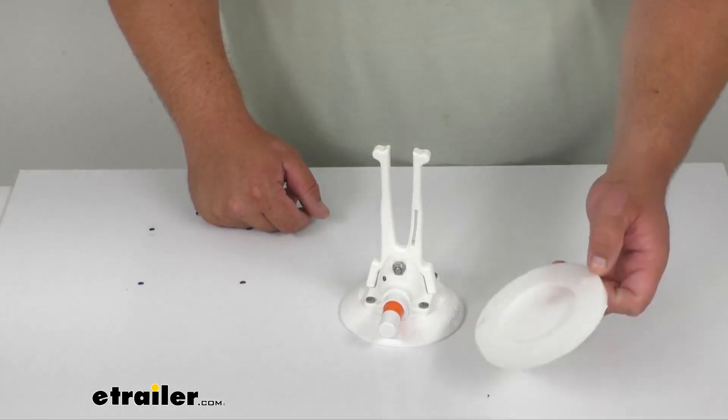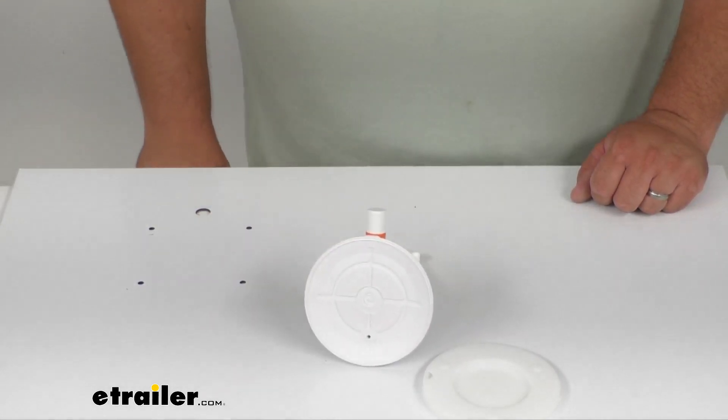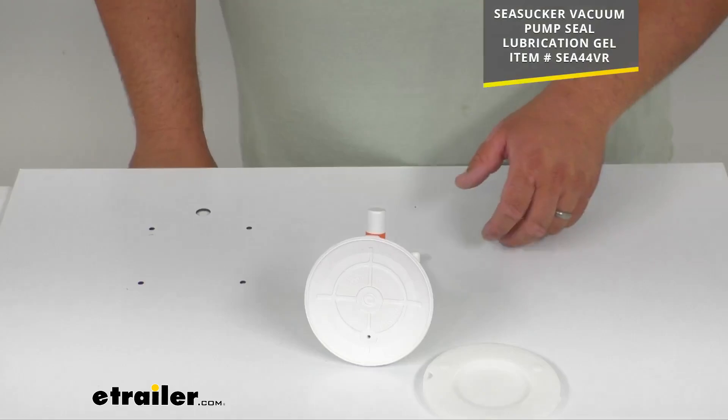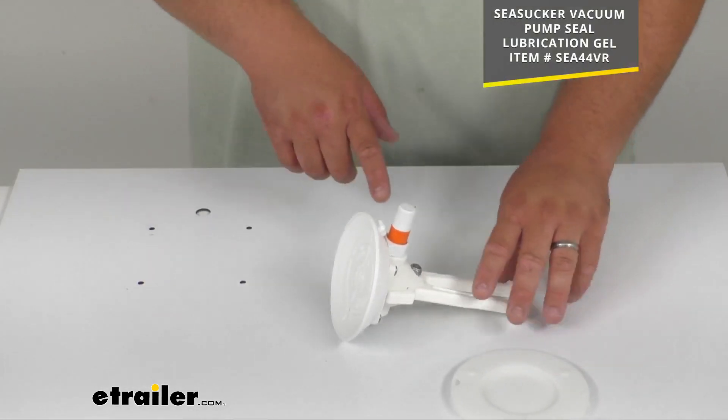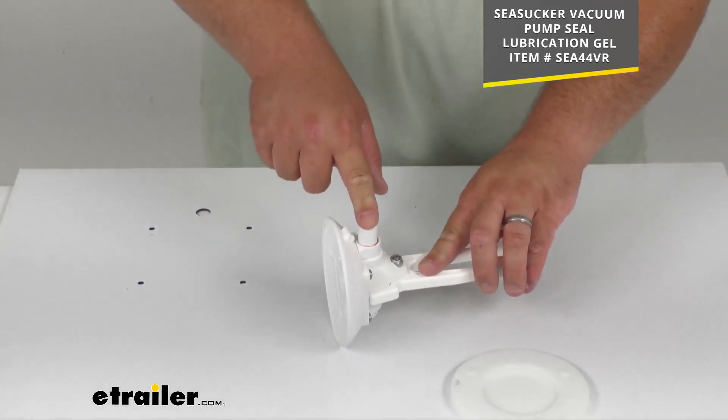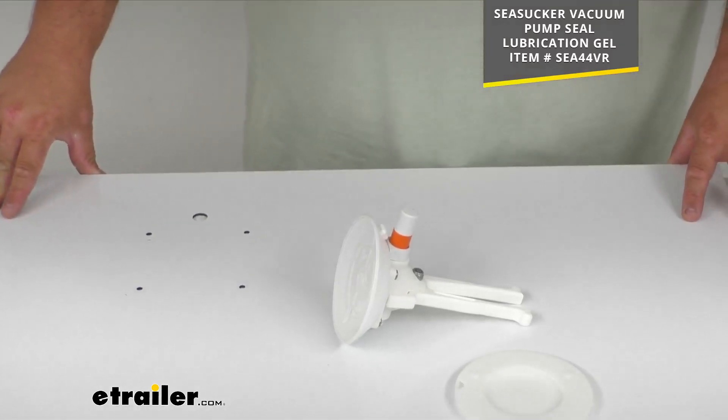Limited lifetime warranty. Made here in the US. Nice product here by Sea Sucker. One thing I recommend you buy that's sold separately is the Sea Sucker vacuum pump seal lubrication gel. That goes inside of the pump and keeps the seal nice and loose and working and lubricated. That way it doesn't gum up on you over time.